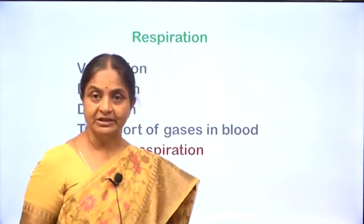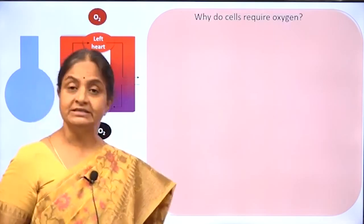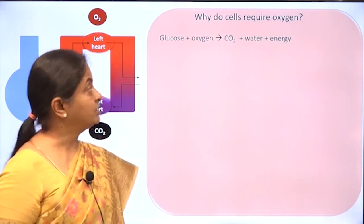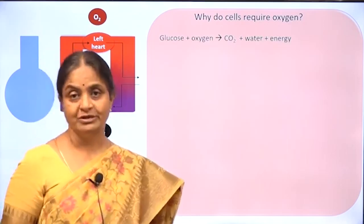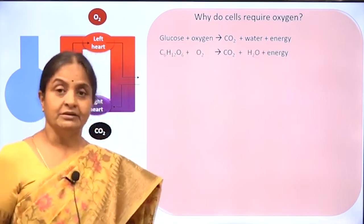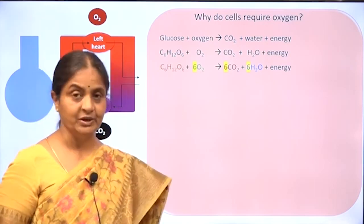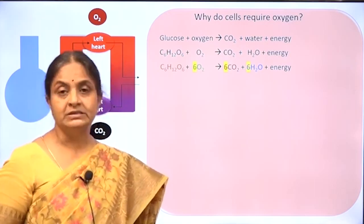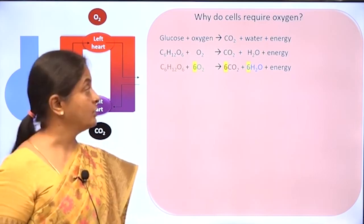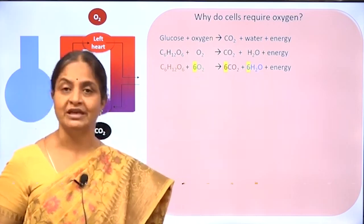We will start with a discussion on cellular respiration. The question is: why do cells require oxygen? At school, you would have learnt this equation: glucose plus oxygen gives carbon dioxide plus water plus energy. That is the balanced chemical equation. However, this equation can be a little misleading because it can make one think that oxygen reacts with glucose to give these products, which is not the case.